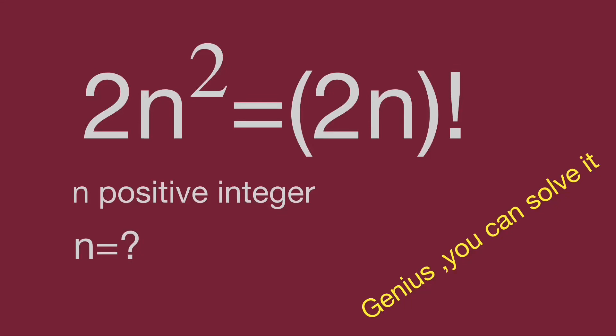Hello, you are watching Bala Hippo math genius videos. We have a simple equation: 2 times n squared equals the quantity (2n) factorial. Find the value of n.